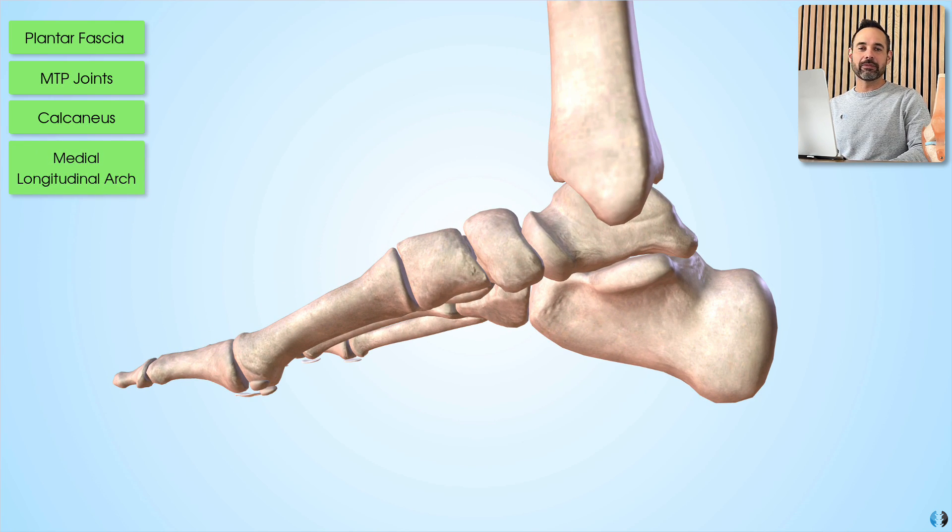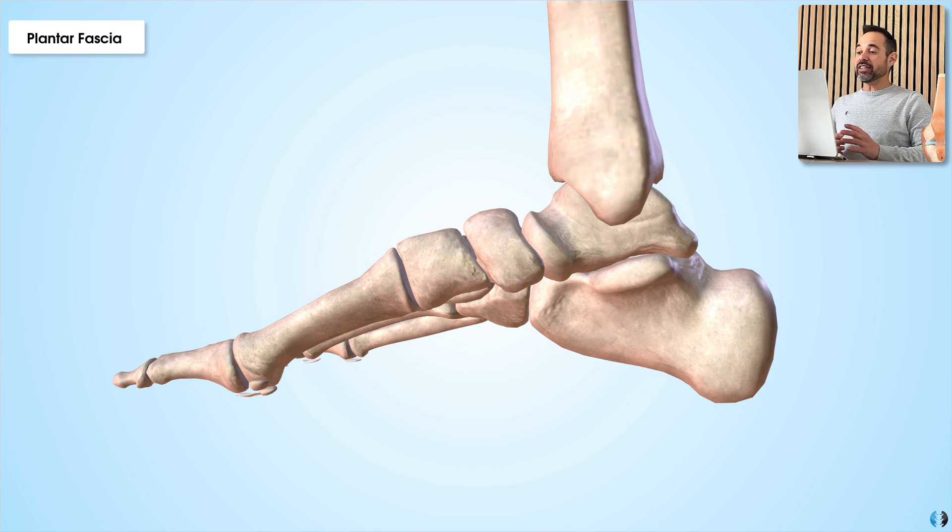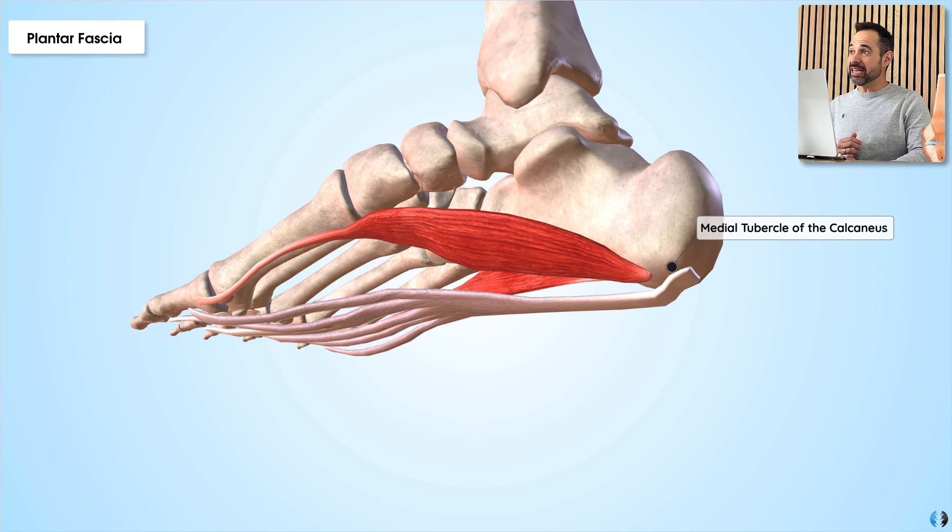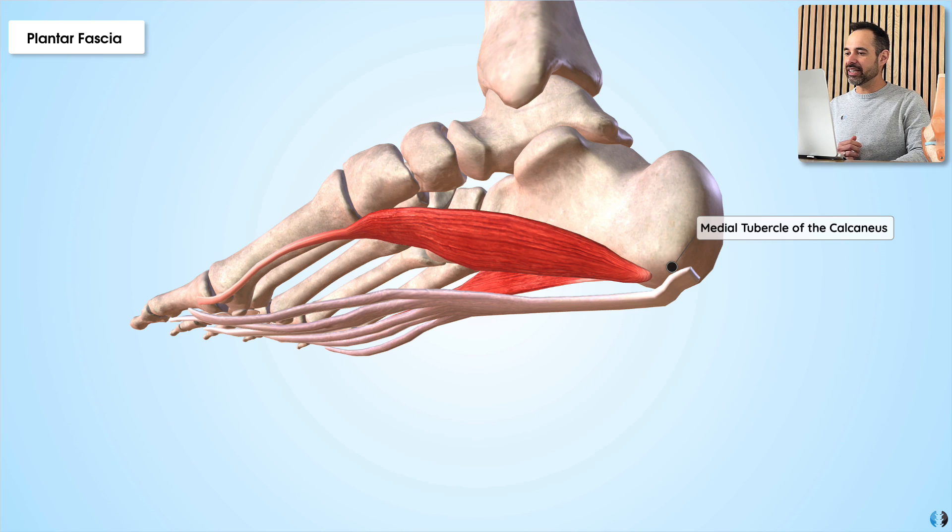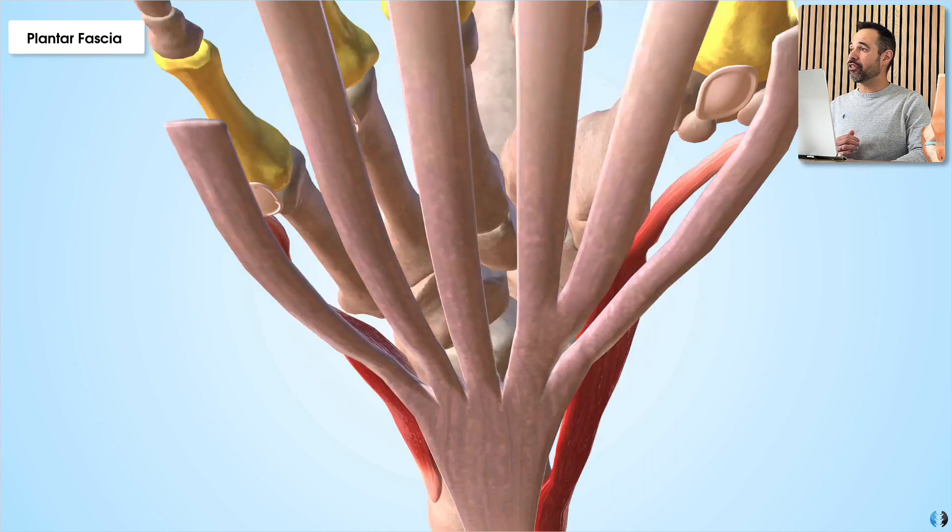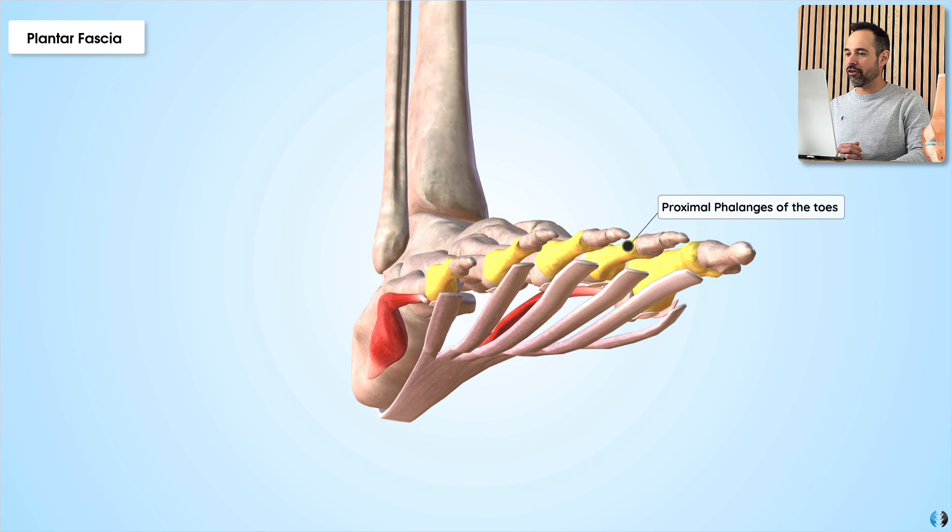So let's start with the plantar fascia. The plantar fascia is a thick fibrous band that originates from the medial tubercle of the calcaneus and extends to the proximal phalanges of the toes.